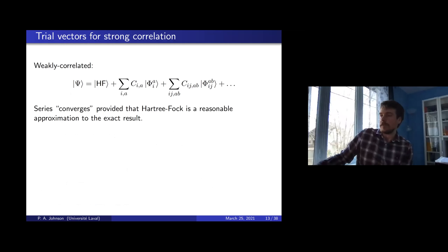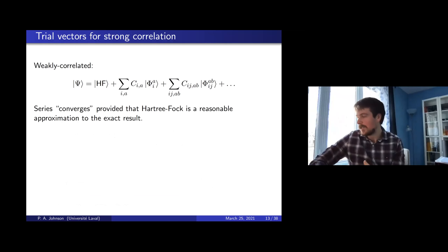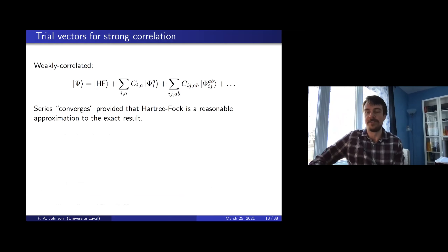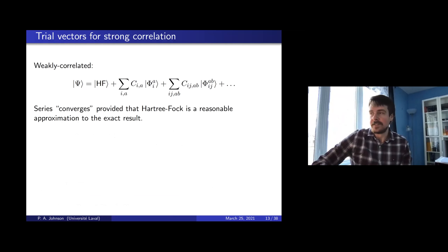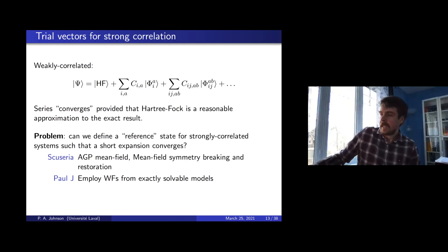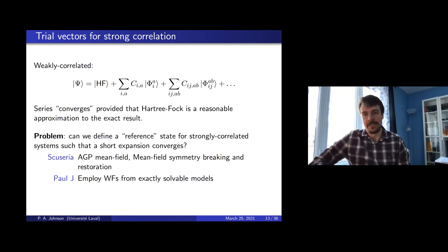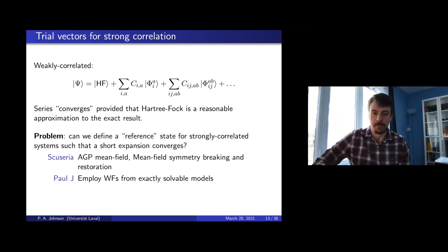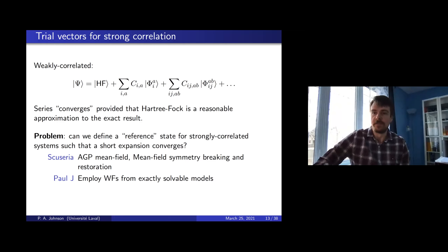The approach taken for most solutions of difficult problems is to break it down into an easy problem we can solve very well, with small corrections. If the easy problem is a reasonable approximation to the right answer, this approach does well. For weakly correlated systems this is Hartree-Fock plus small corrections. Can we do the same for strongly correlated systems? This will necessarily force us to break strongly correlated systems into different subclasses and make measurable progress. We're going to solve systems we can solve exactly and then build corrections systematically. My postdoc advisor tries to do this based on the anti-symmetrized geminal power; the way we are doing it is using exact solutions from model systems solvable by the Bethe ansatz.